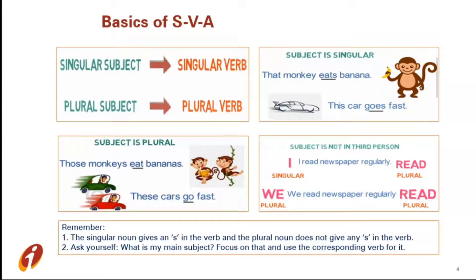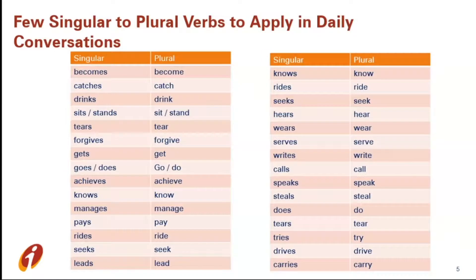The basics of subject-verb agreement which we will learn in GIST. The first basic point is: if the subject is singular in a sentence then the verb will also be singular. And if the subject is plural in the sentence then the verb will also be plural.